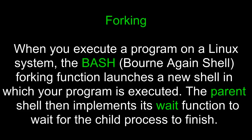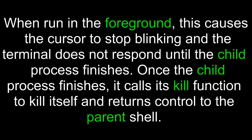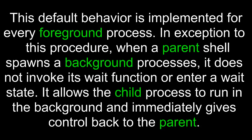Forking. When you execute a program on a Linux system, the bash or Bourne-again shell forking function launches a new shell in which your program is executed. The parent shell then implements its wait function to wait for the child process to finish. When running in the foreground, this causes the cursor to stop blinking and the terminal does not respond until the child process finishes. Once the child process finishes, it calls its kill function to kill itself and returns control to the parent shell. This default behavior is implemented for every foreground process.